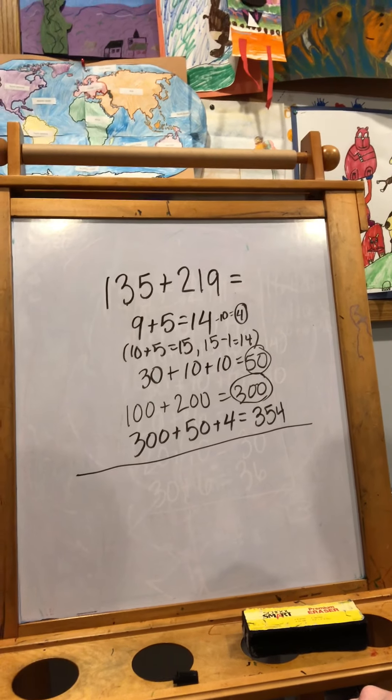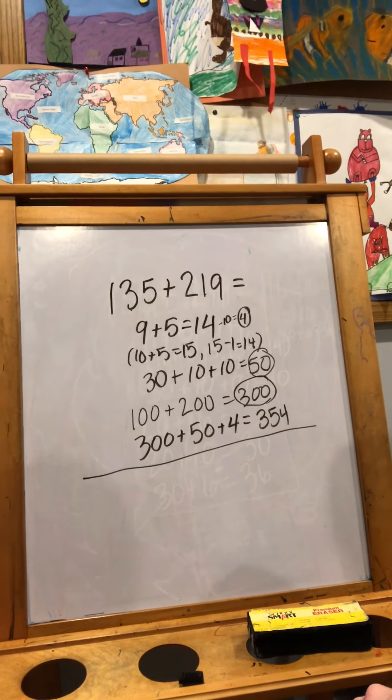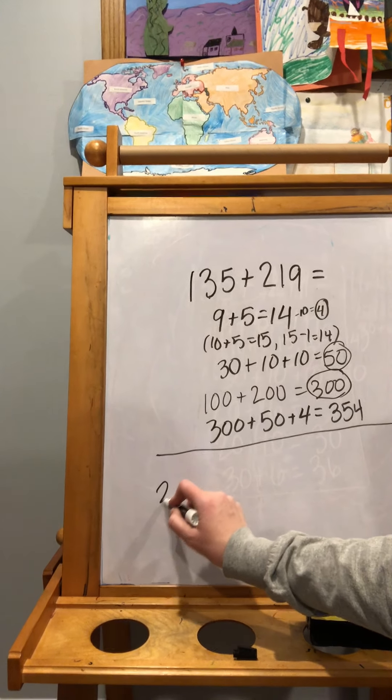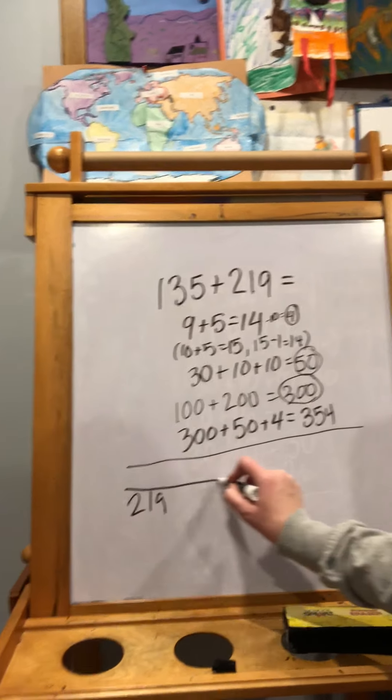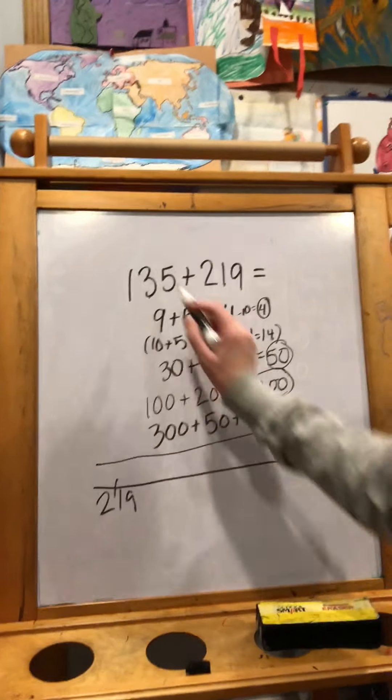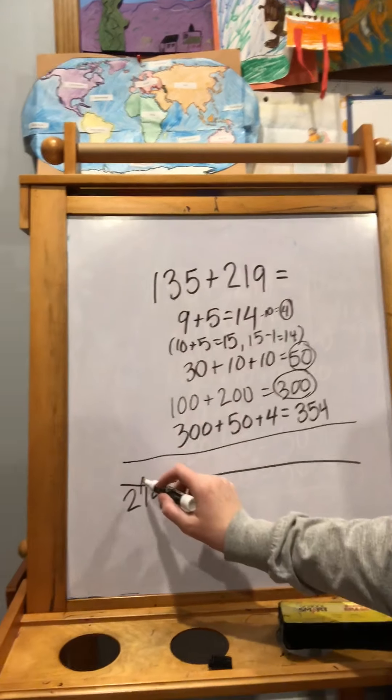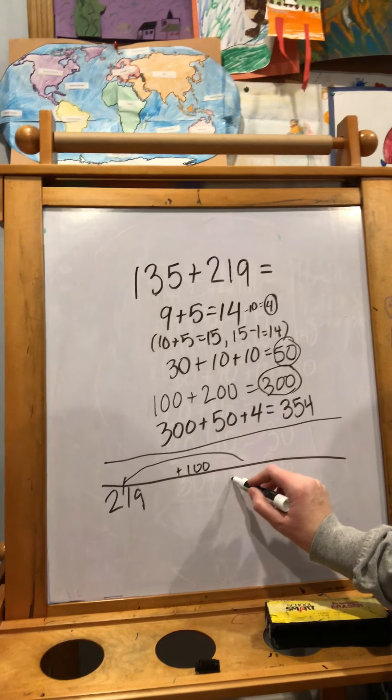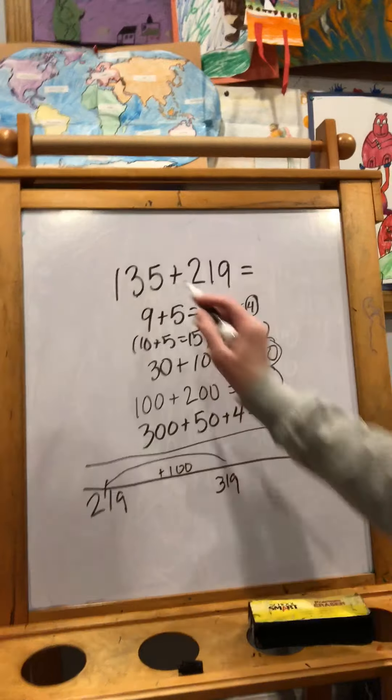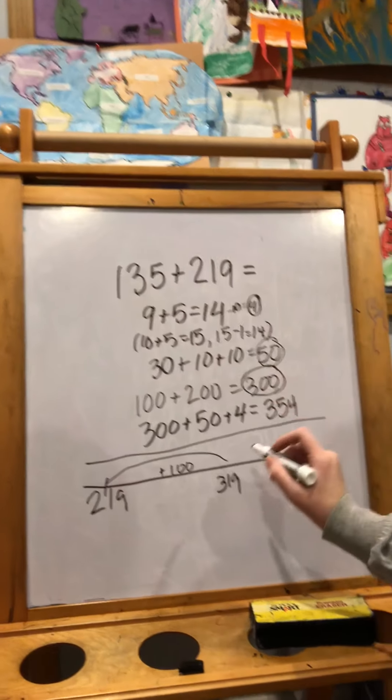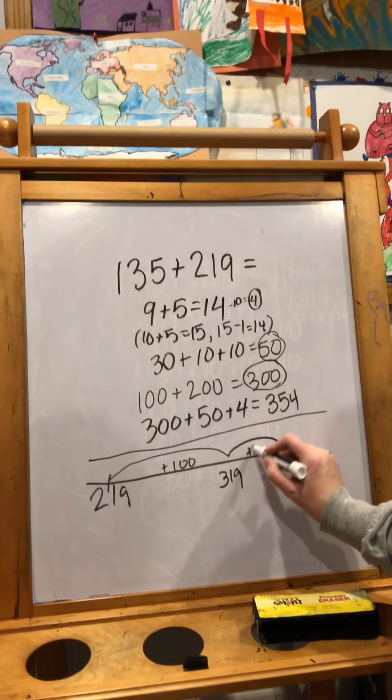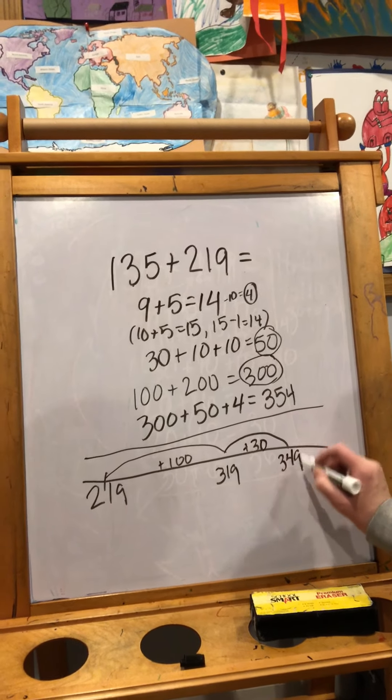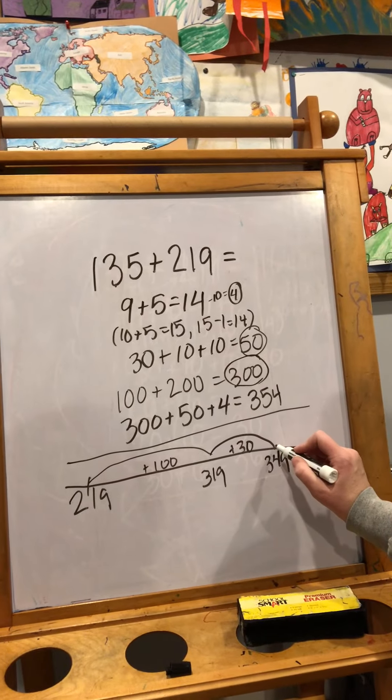Okay, my strategy was I was thinking of it more on a number line. I was thinking if I had started at 219 on a number line. And then if I jumped 100, if I added 100 on my number line, that would take me to 319. Then I thought what if I added 30 to that, that would get me to 349. And then I just had five more to go.